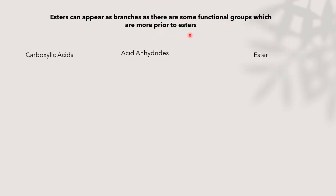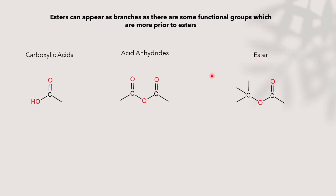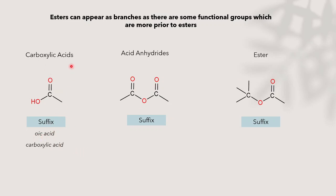There are some functional groups which are more prior to ester. Two of them are carboxylic acid and acid anhydrides — they are kept higher in the priority sequence than ester. For carboxylic acid, this is how it looks; this is acid anhydride; and this is ester. The suffixes for them: there are two suffixes for carboxylic acid depending upon whether the carbon is to be accounted in the suffix or not.